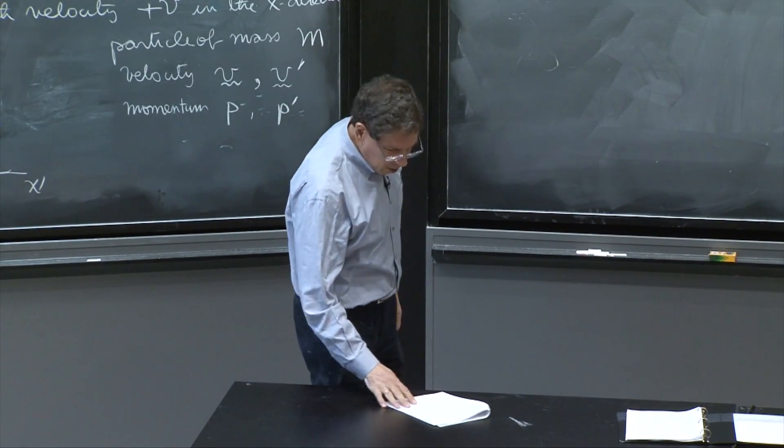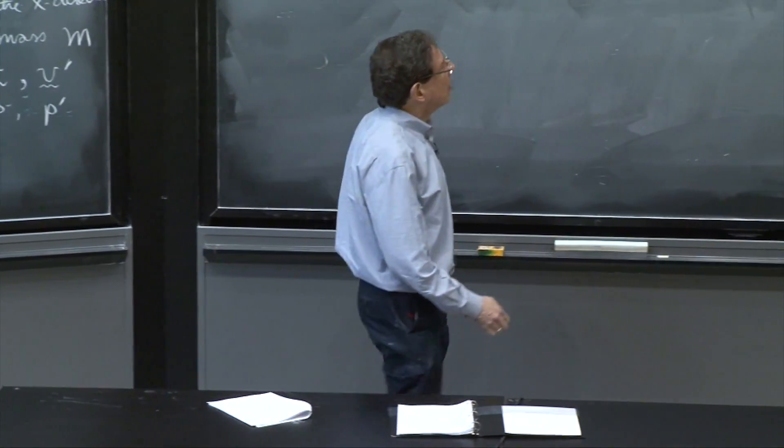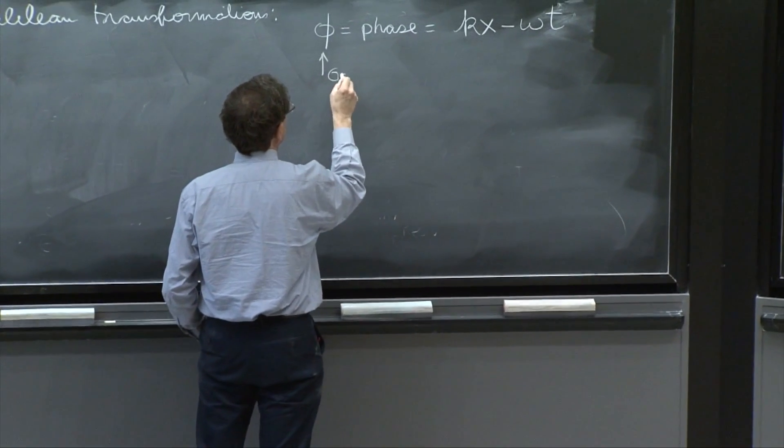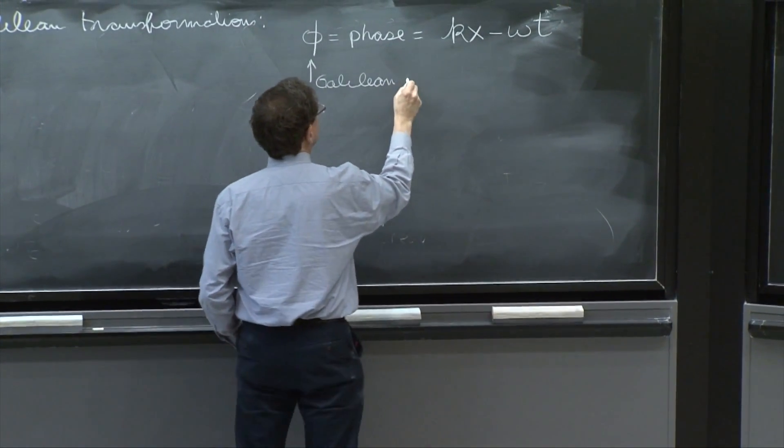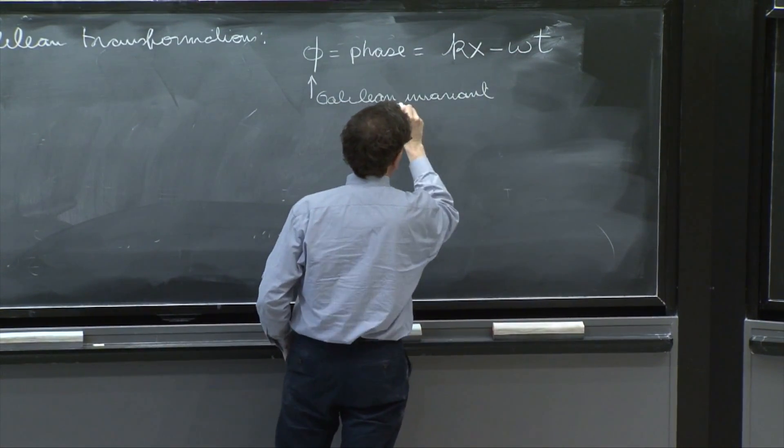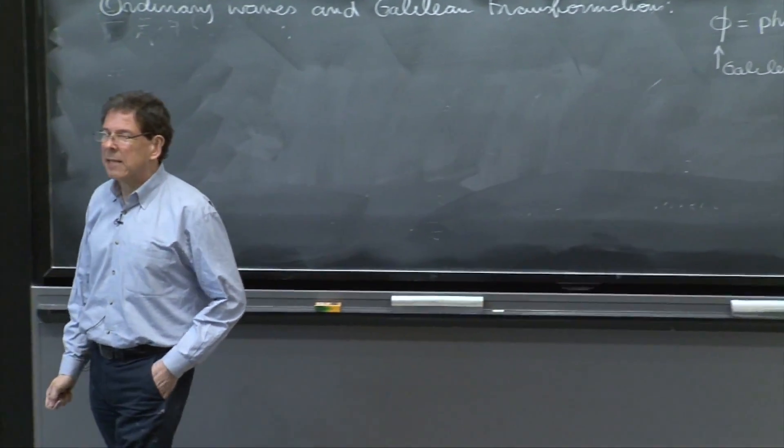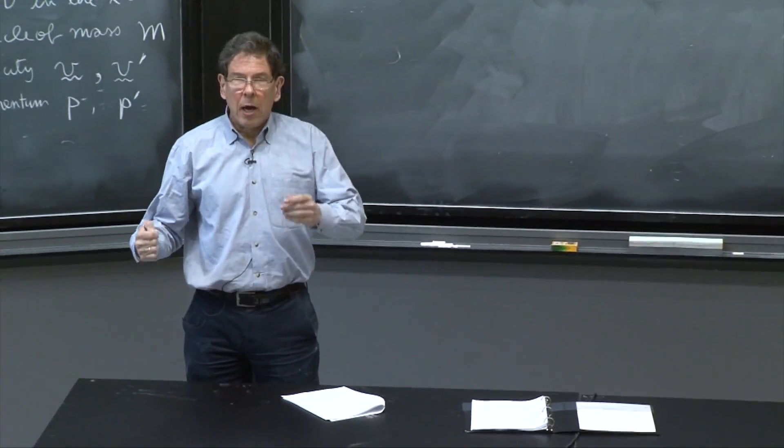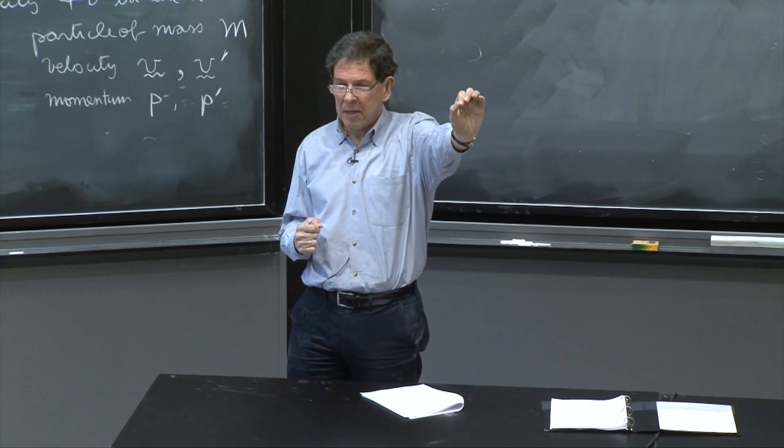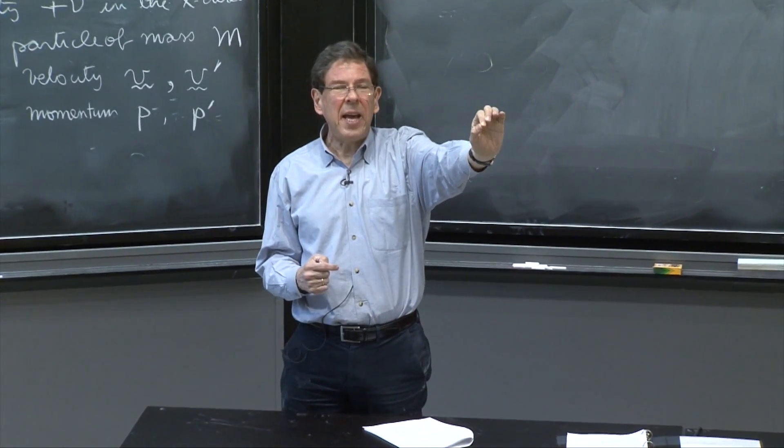And whenever you have such a wave, what we say is that the phase of this wave is a Galilean invariant. What it means is that two people looking at this wave, and they look at a point on this wave, both people will agree on the value of the phase.